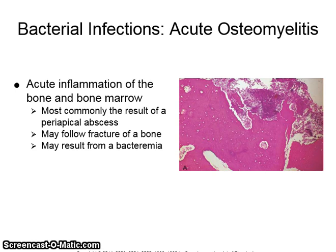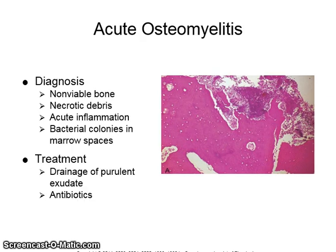Acute osteomyelitis is an acute inflammation of the bone and bone marrow, which is most commonly the result of a periapical abscess. It may follow a fracture of bone and may also result from a bacteremia. Diagnosis is established by the existence of non-viable bone, necrotic debris, acute inflammation, and bacterial colonies in the marrow spaces. Treatment involves drainage of the purulent exudate and antibiotics.